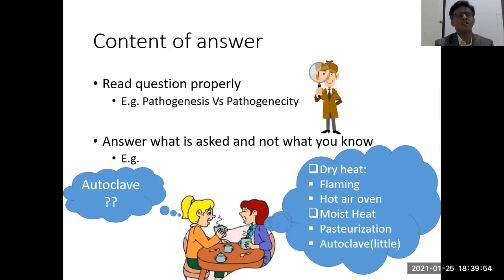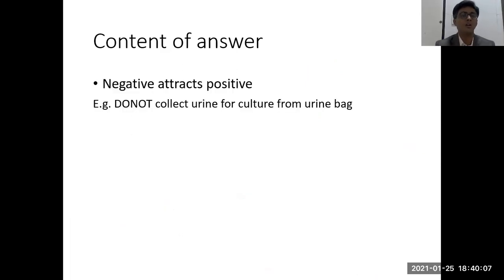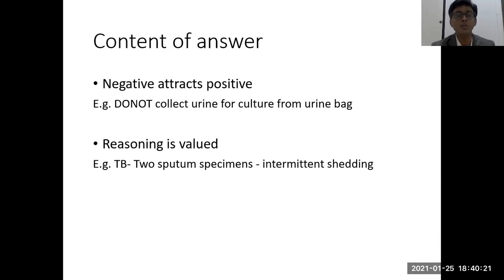Answer what is asked and not what you know. For example, if a question asks to write a note on autoclave and we start writing about dry heat, flaming, hot air oven, moist heat, and pasteurization with only a little on autoclave — that is where we lose marks. Also, negative aspects like 'do not collect urine for culture from urine bag' can attract bonus points. Reasoning is also valued — in lab diagnosis of tuberculosis, stating that two sputum specimens are collected because of intermittent shedding adds to the marks.